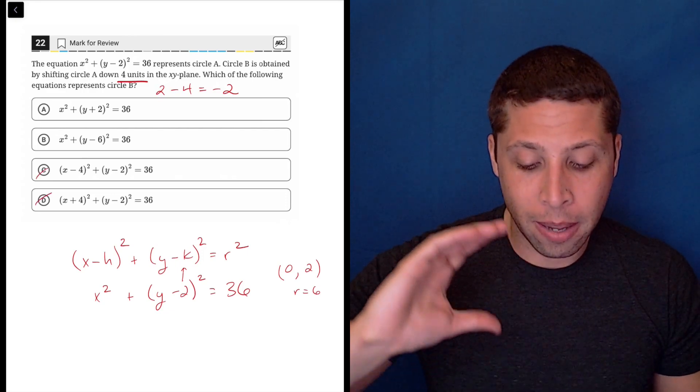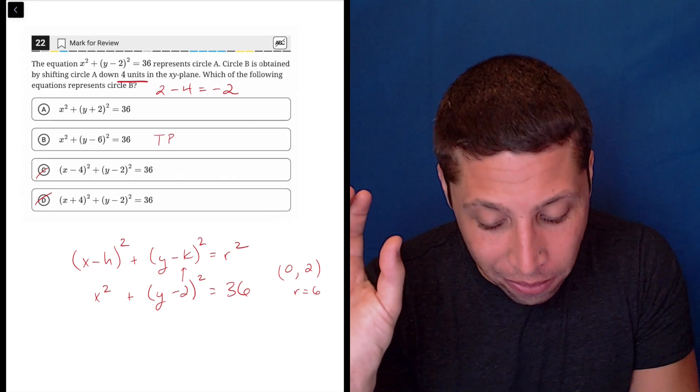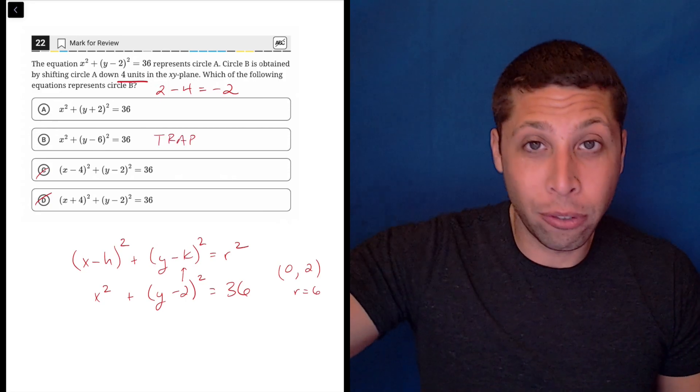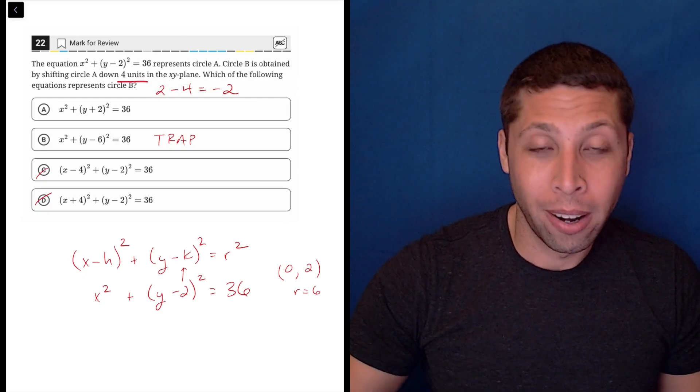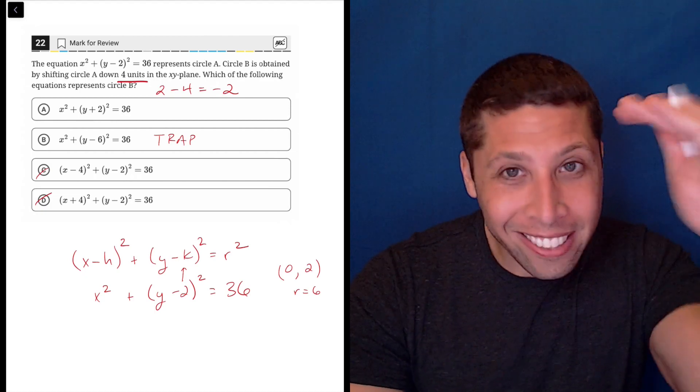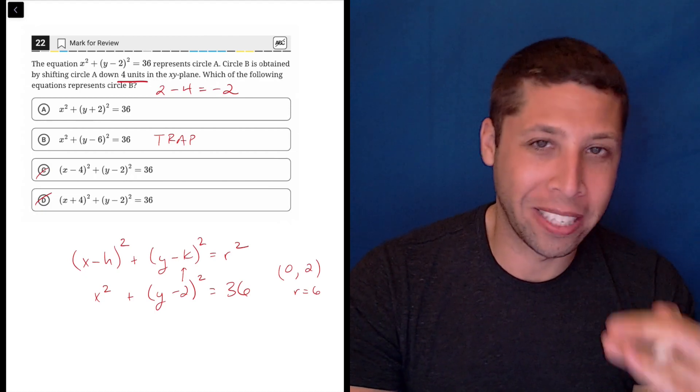But the trap answer is definitely d because your brain goes, oh, negative 2 minus 4 is negative 6. But no, it's positive 2 is the center and that's moving down to negative 2.